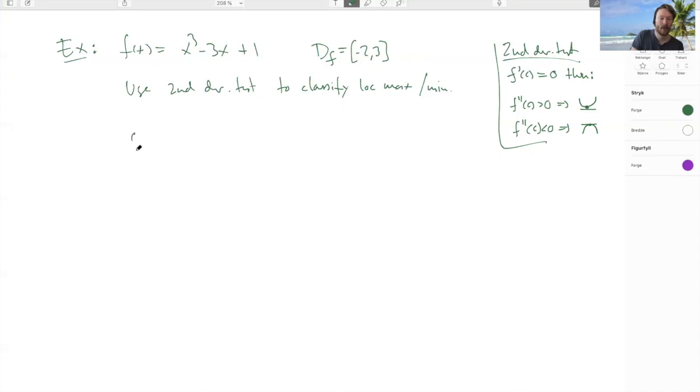And now we compute the derivative here and we get 3x² - 3, which is 3(x² - 1). And this is zero if and only if x = ±1.